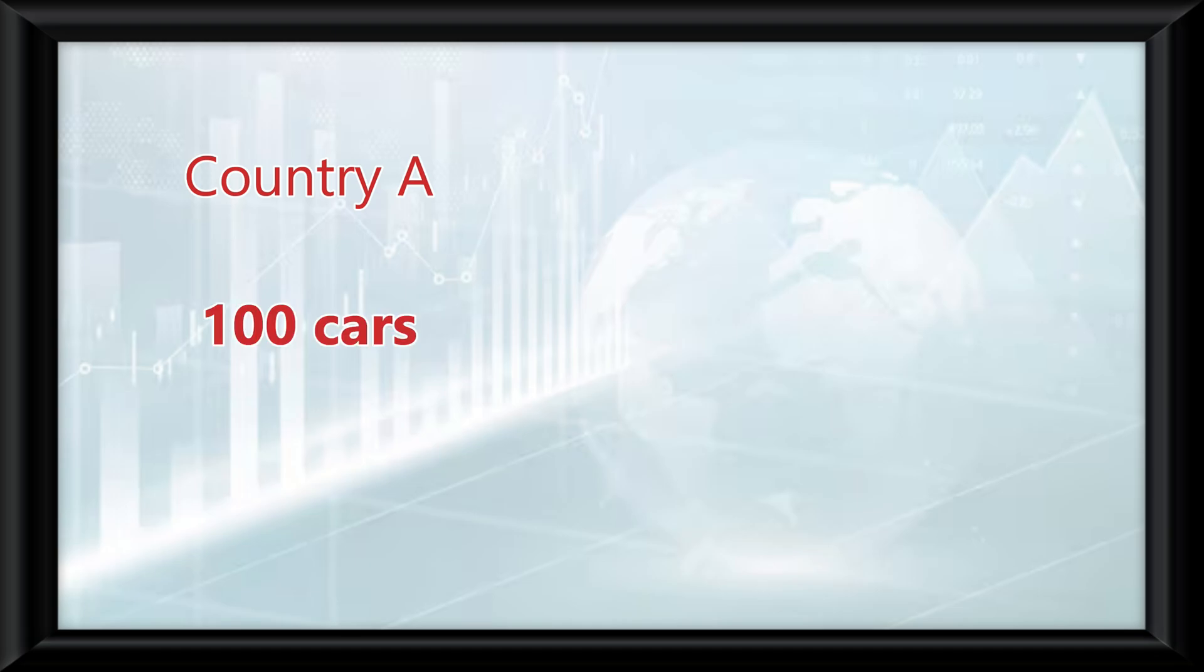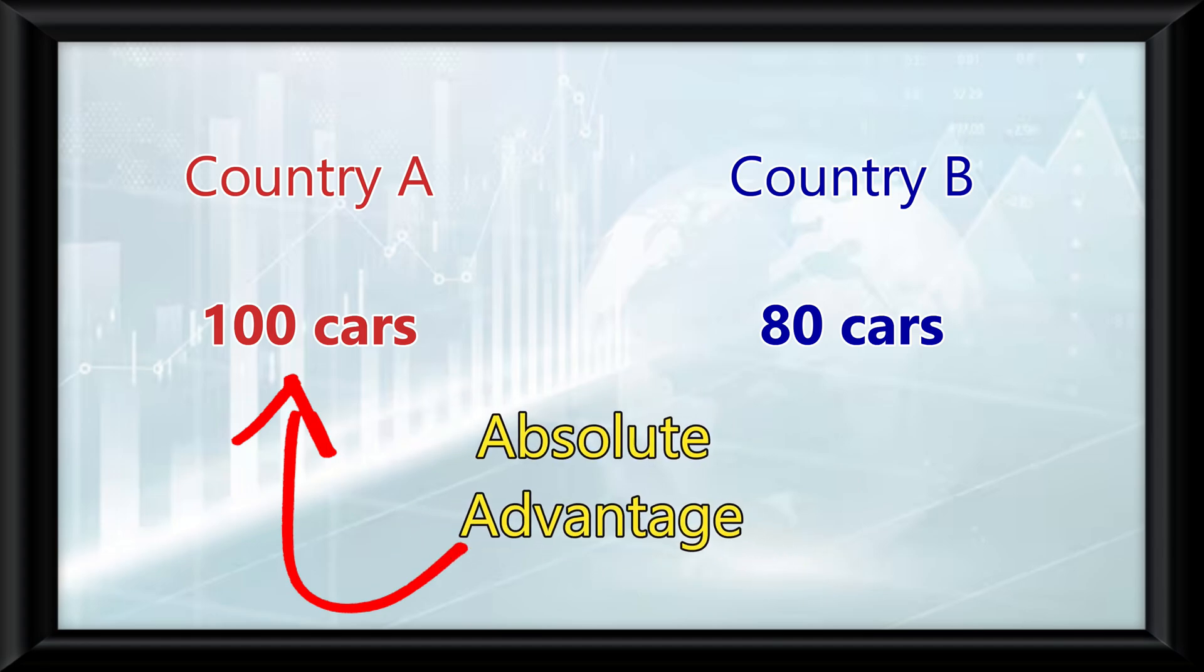So if country A can produce 100 cars using the same resources that country B uses to produce 80 cars, country A has an absolute advantage in car production.